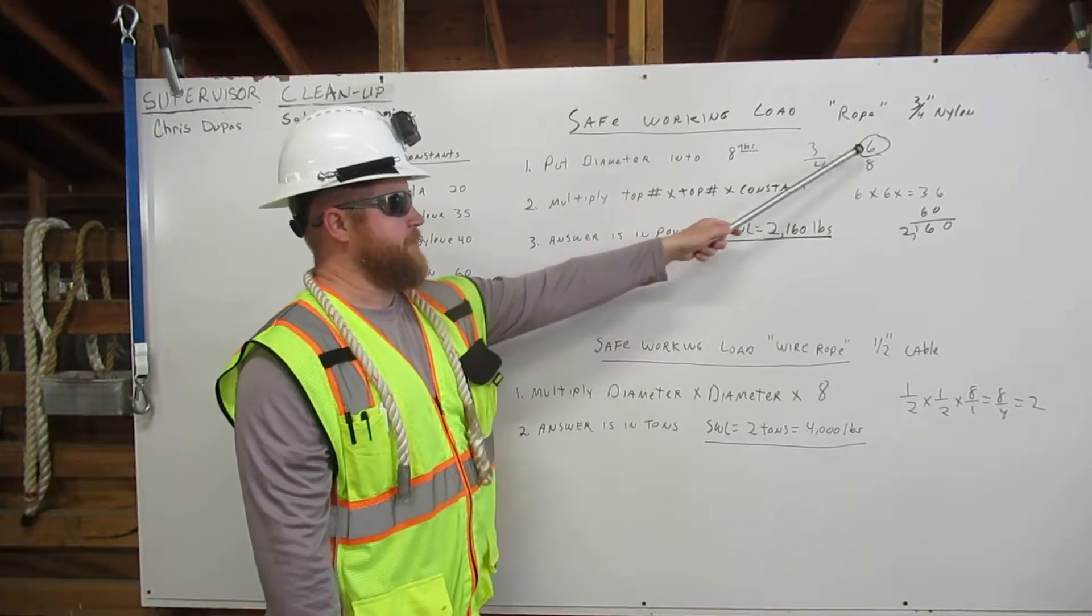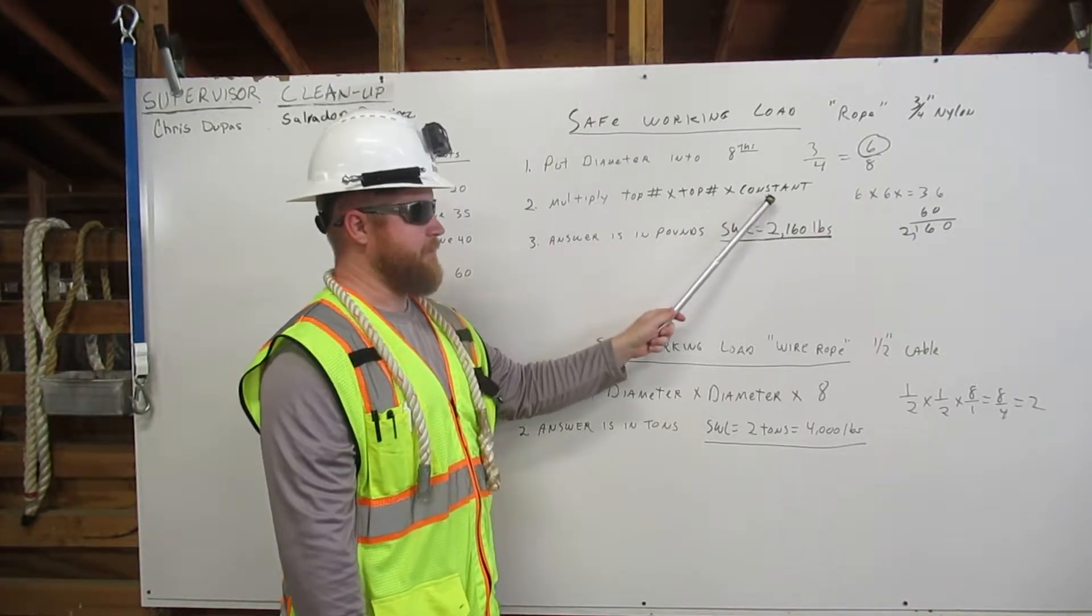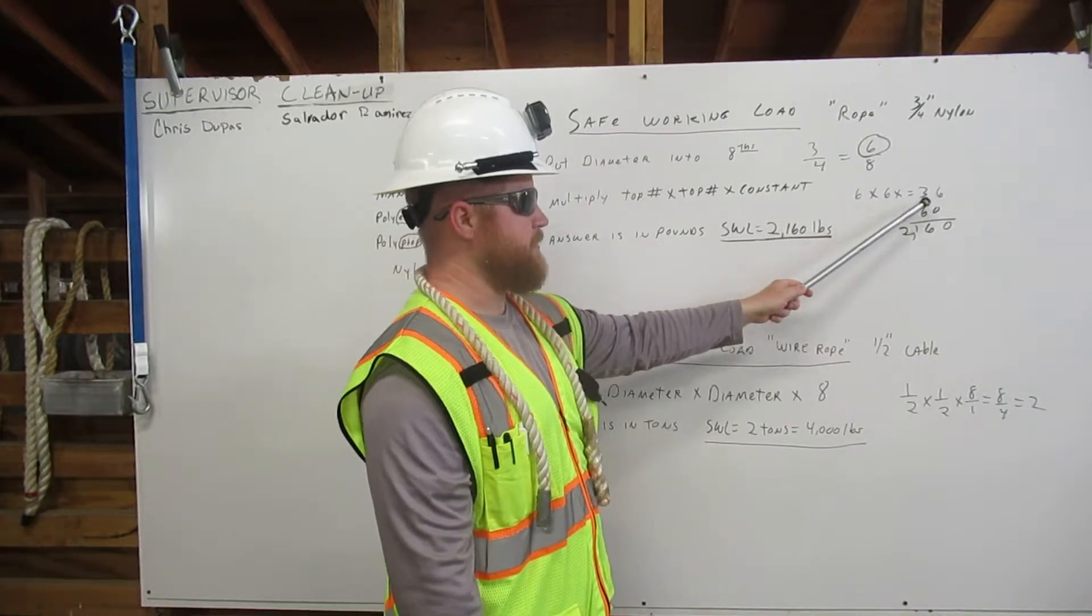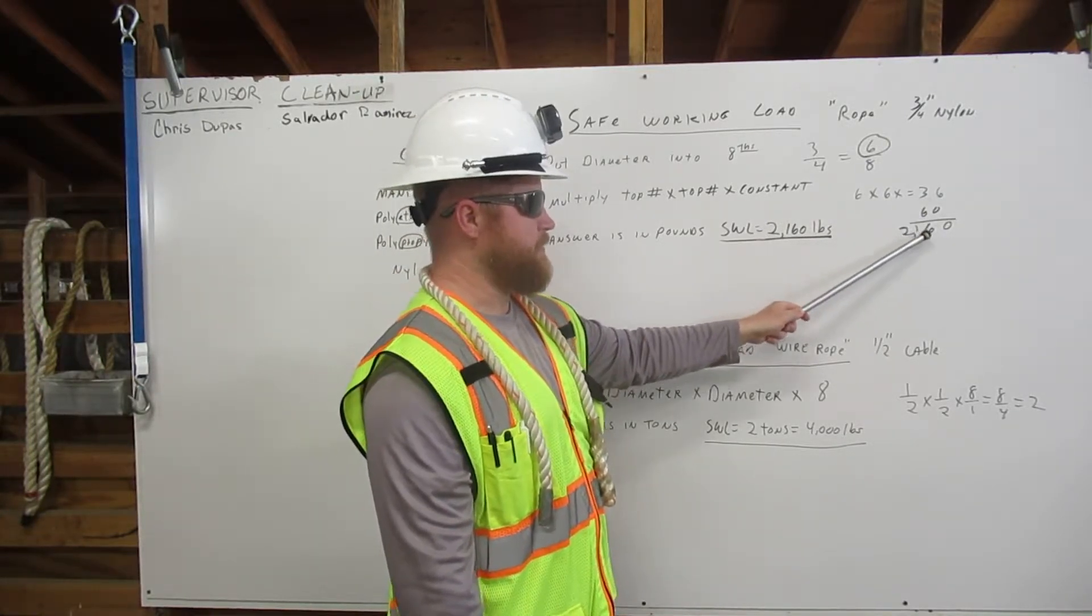So here we take that top number and multiply it by itself and then by a constant. Six times six equals 36 times the constant equals 2,160.